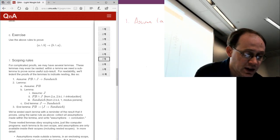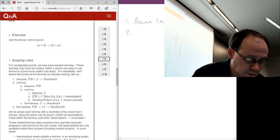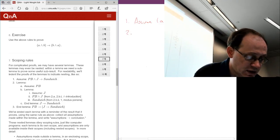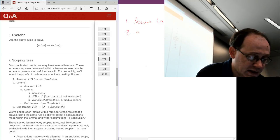And then we can use and elimination to get A on its own. So we're going to get A, and that's going to be from statement 1 by and elimination.